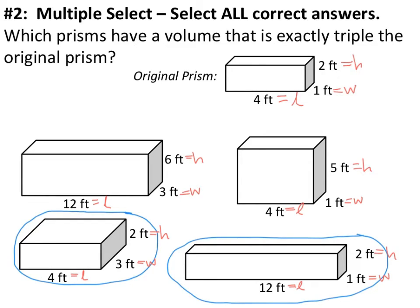The first rectangular prism is not the right answer because all three dimensions — length, width, and height — have been tripled. The second one is also not the right answer because the height hasn't been tripled; it's only been increased by 3 feet, not tripled.